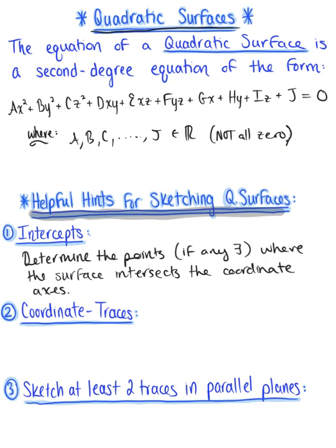And we know how to do this. If you wanted to determine where the surface is going to cross the x-axis, you let y equal 0 and z equal 0. And the other two intercepts work in a similar manner.